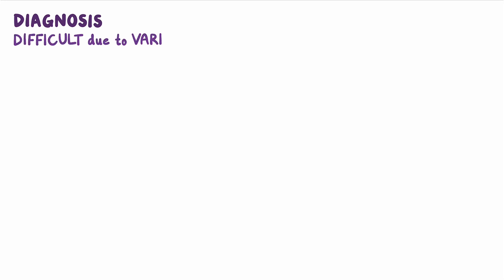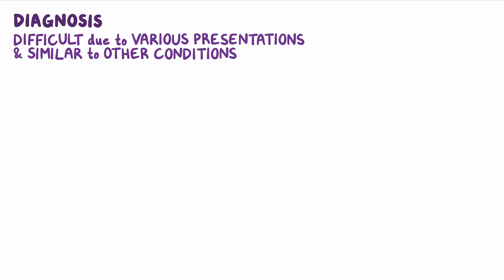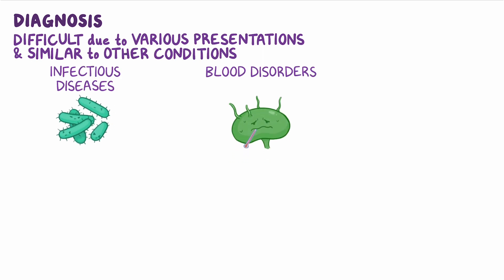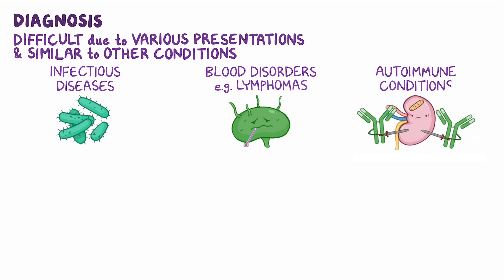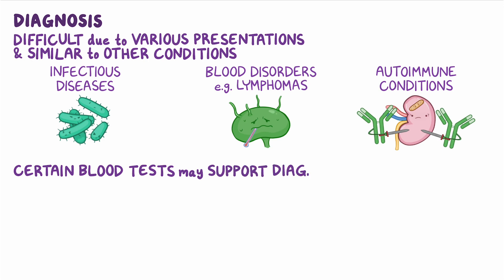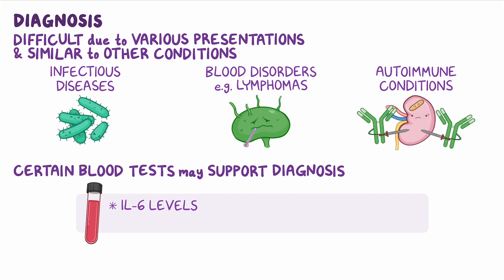Diagnosis of Castleman disease can be challenging due to its various clinical presentations and similarity with other clinical conditions, including infectious diseases, blood disorders like certain lymphomas, and autoimmune conditions. Certain blood tests may be performed to support the diagnosis, like IL-6 levels and a polymerase chain reaction, or PCR, for human herpesvirus-8 DNA.